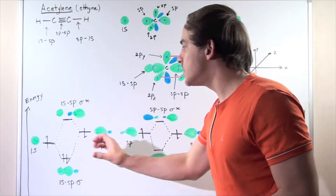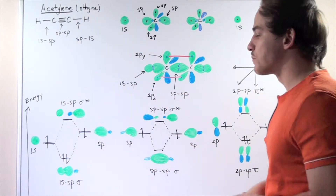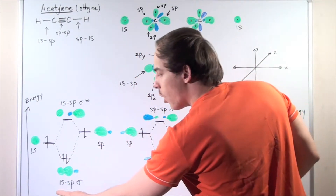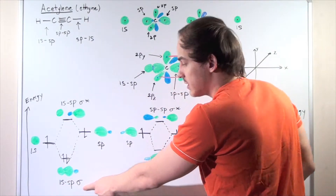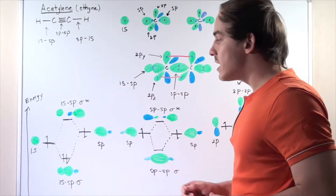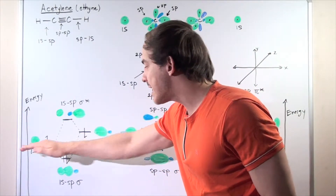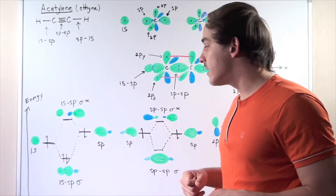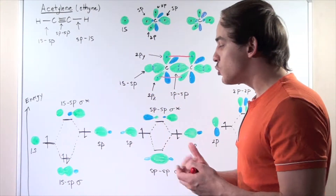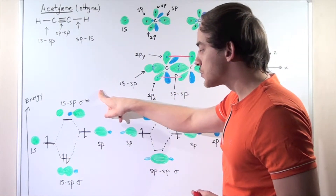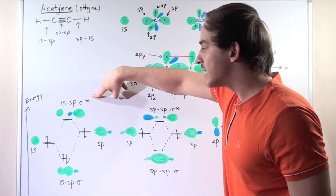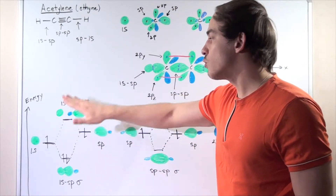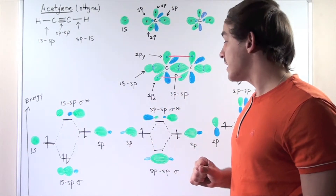Now let's look at the energy diagram for all these interactions. The 1S interacts with the SP to form the 1S-SP sigma molecular orbital. Notice that the 1S is lower in energy than the SP because the 1S has more S character. When they interact, they form two types of molecular orbitals: bonding and anti-bonding. Since the anti-bonding orbital is higher in energy, electrons will not be found in this destabilizing molecular orbital.